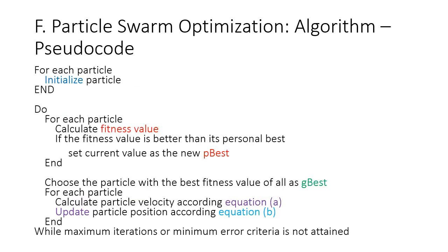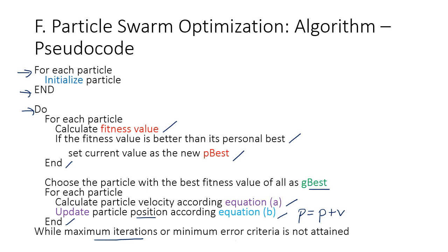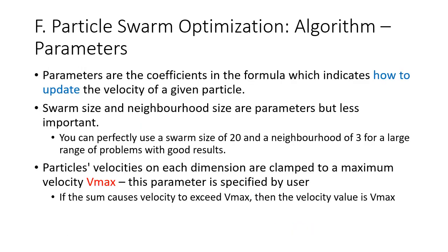The whole process can be represented in pseudocode. For each particle, initialize the particle. Then, for each particle, calculate the fitness value — if the fitness value is better than its personal best, set it as the new personal best. Choose the particle with the best fitness value as global best. For each particle, calculate particle velocity according to Equation A, and update the new particle position according to Equation B: p equals p plus v. Repeat while the maximum iterations or minimum error criteria is not attained.